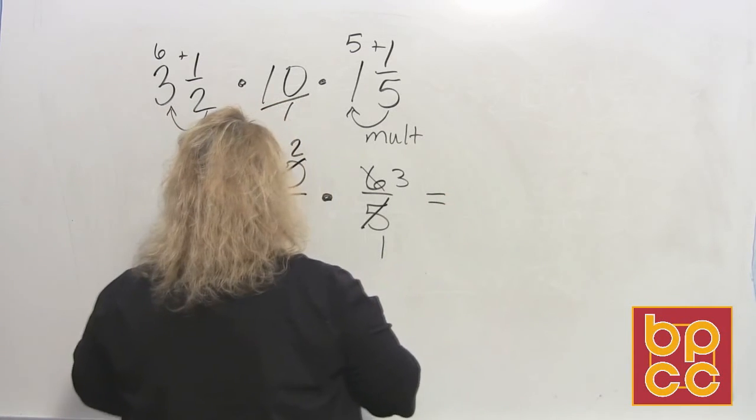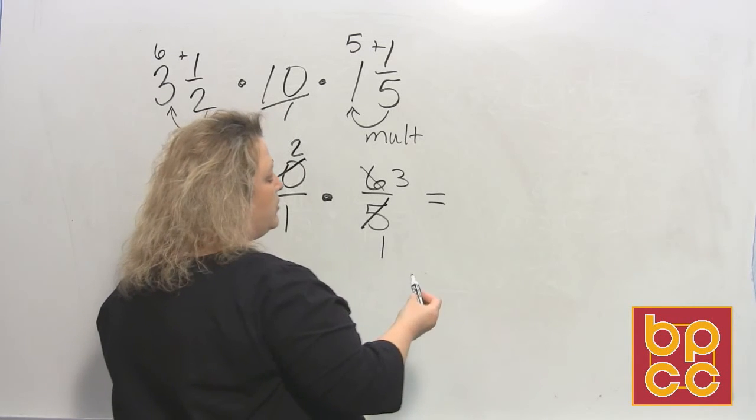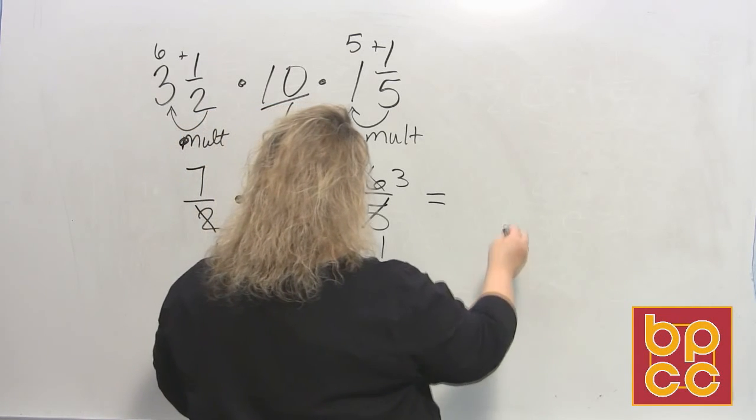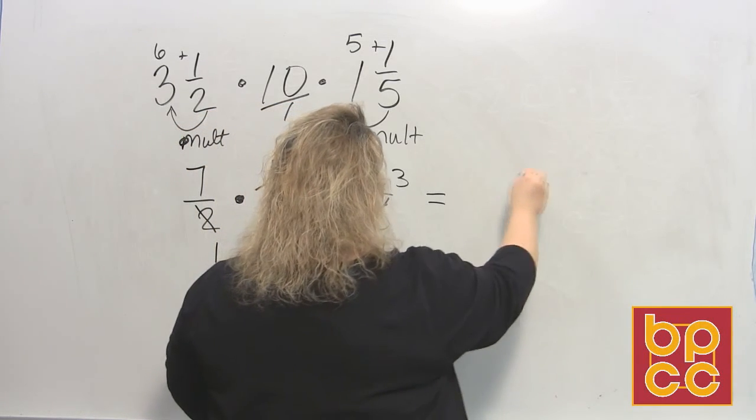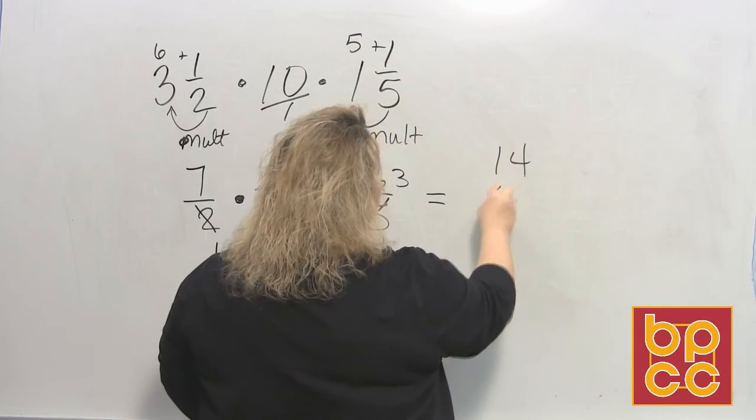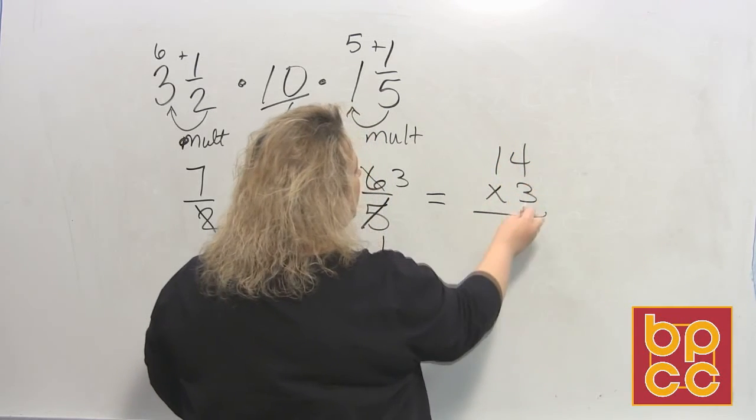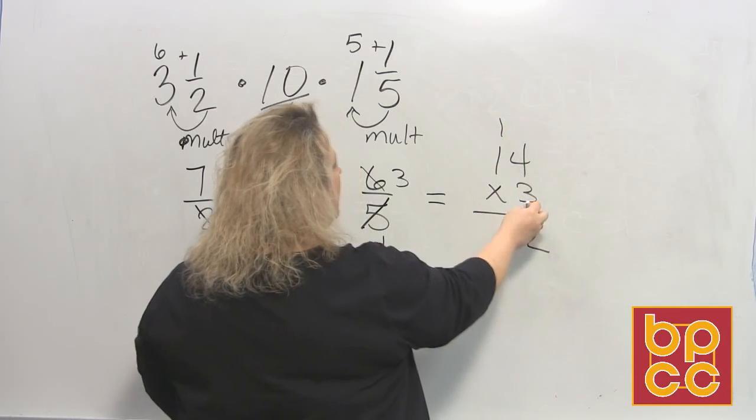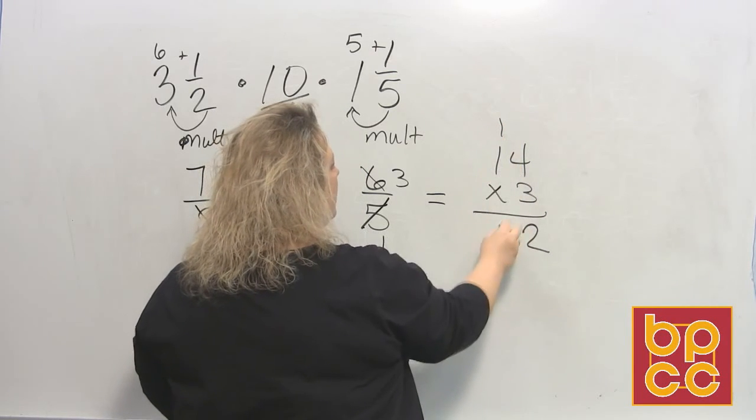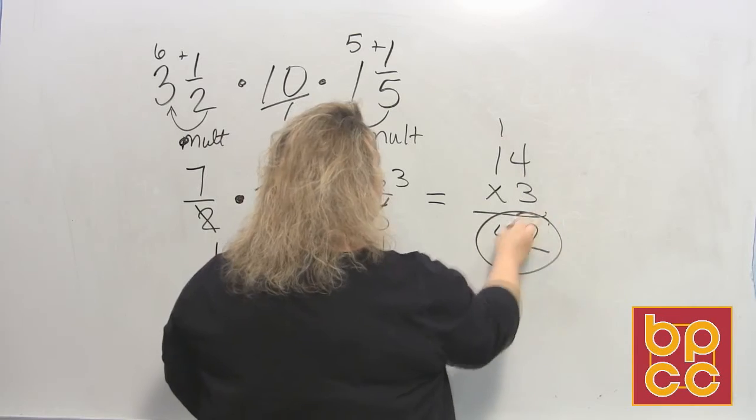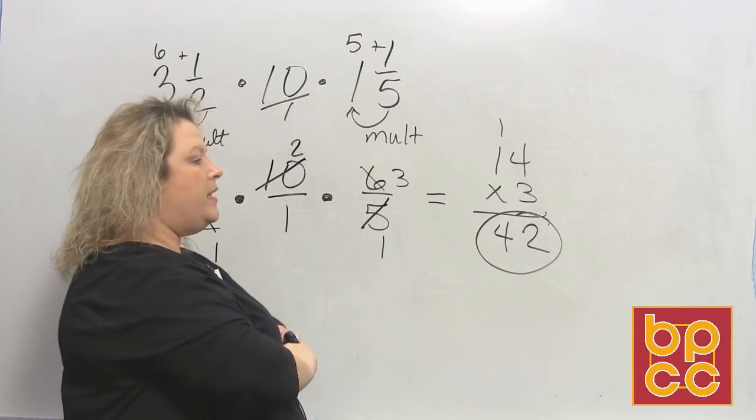So I multiply the tops. 7 times 2, which is 14, and 14 times 3. If you don't automatically know, do the math. 14 times 3. 3 times 4 makes 12, carry the 1. 3 times 1 makes 3, plus 1 makes 4. So the answer is 42.